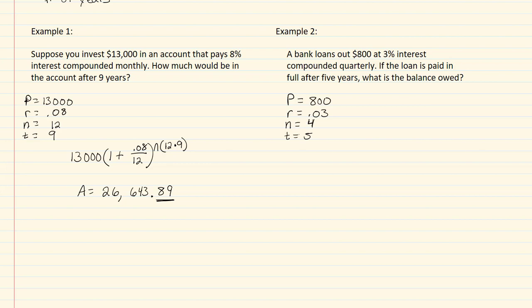So plugging that into our calculator, we're going to get A equals our P, which is eight hundred, times one plus our rate which is point zero three, divided by four, raised to the four times five. And so when I calculate that out, I should be getting that A equals nine hundred and twenty-eight dollars and ninety-five cents.